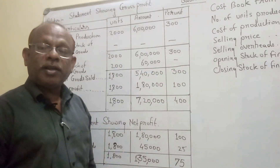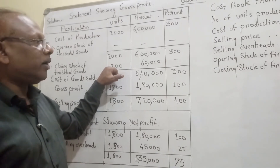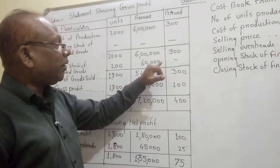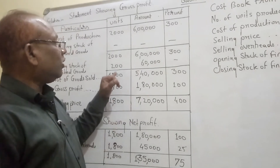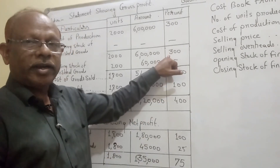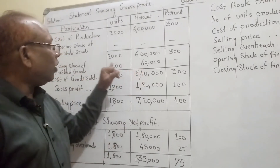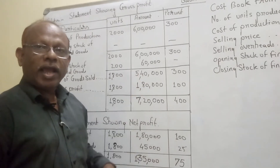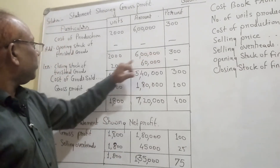We have to deduct the closing stock as per the format of the cost sheet. Closing stock of finished goods is given as 200 units. The cost of the closing stock per unit is the same as the cost of production, which is 300 rupees per unit. So we deduct the closing stock value from the cost of production plus opening stock to get the cost of goods sold.